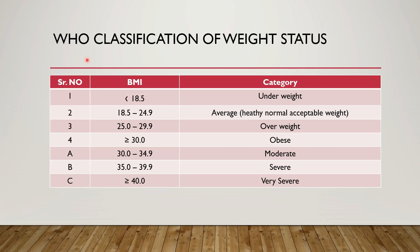This is the WHO classification of weight status. If the BMI of the person is less than 18.5, then that person falls under the category of underweight. If the BMI is 18.5 to 24.9, then that BMI is acceptable. Then 25 to 29.9, that person is overweight. If the person has a BMI greater than or equal to 30, then that person is obese.